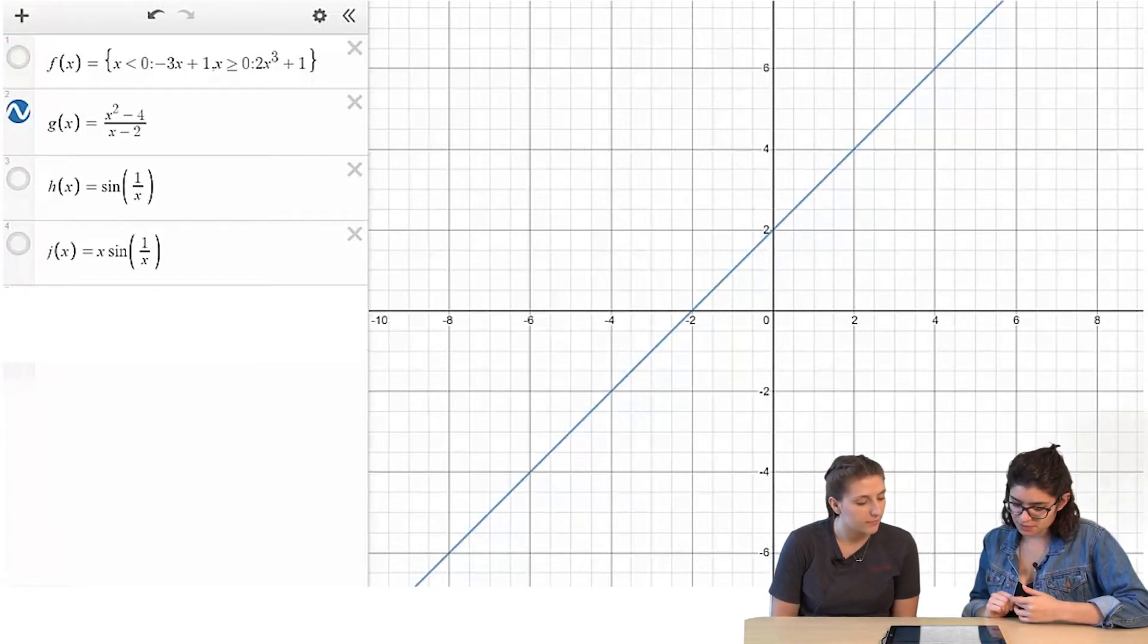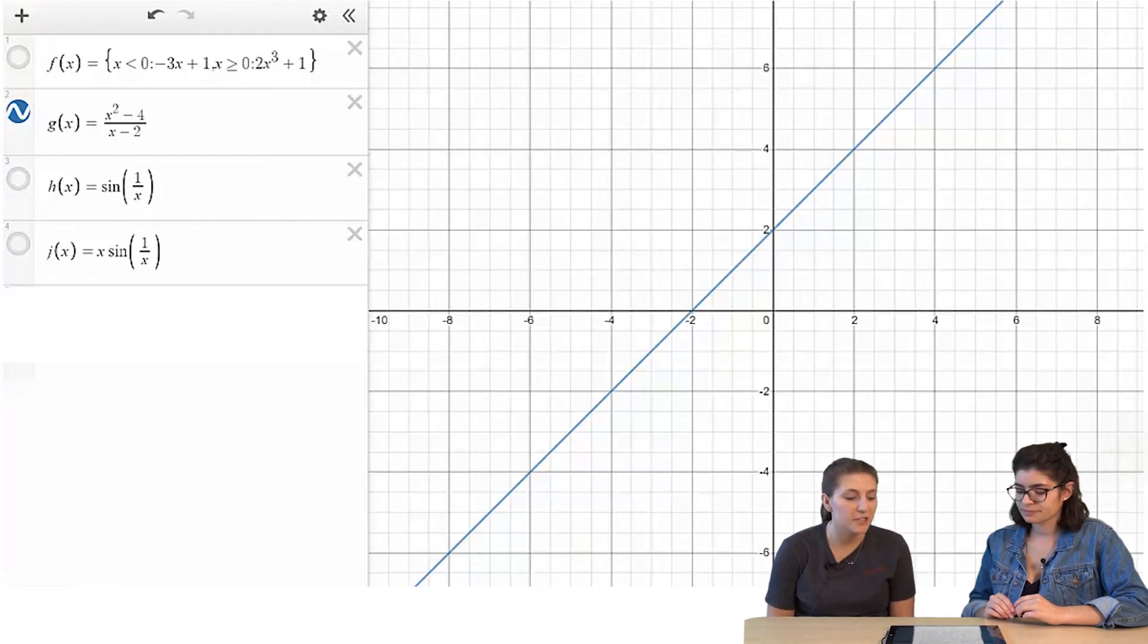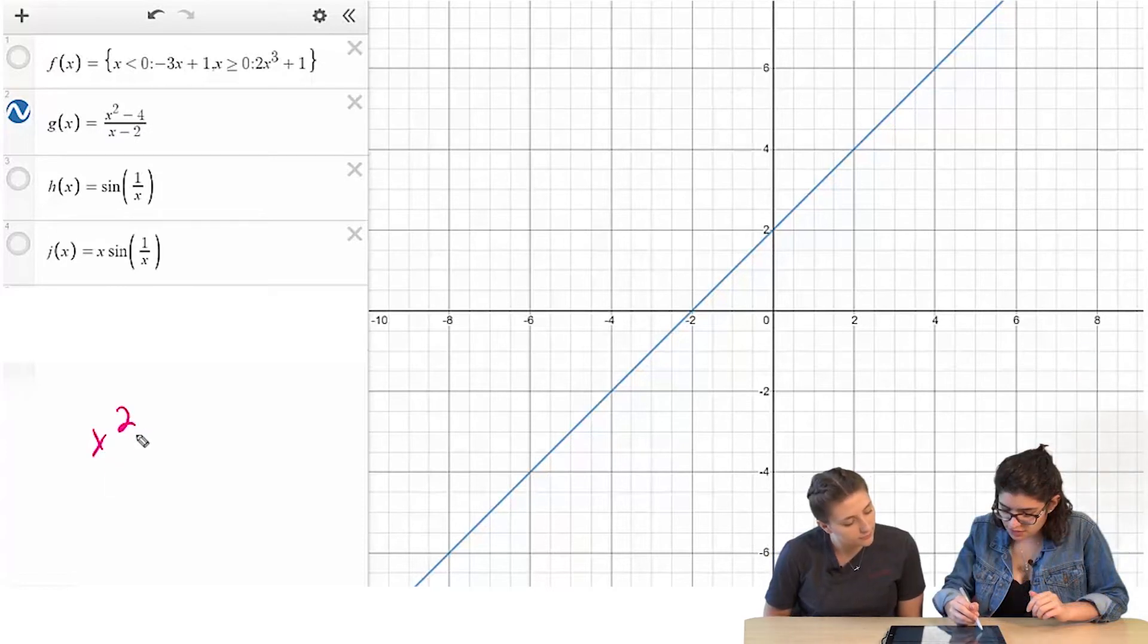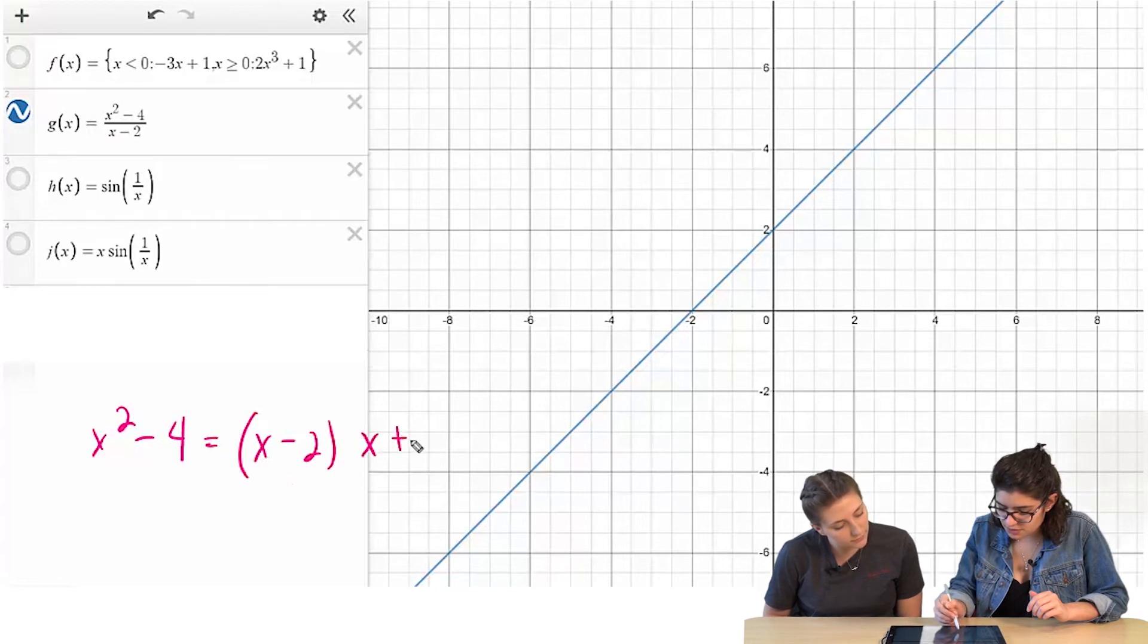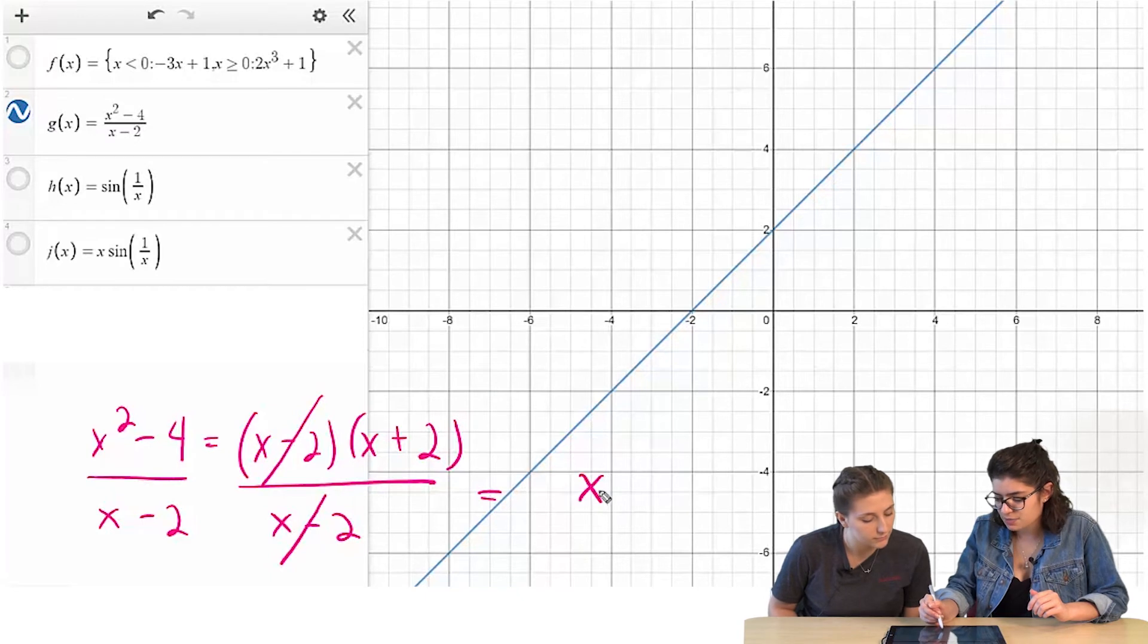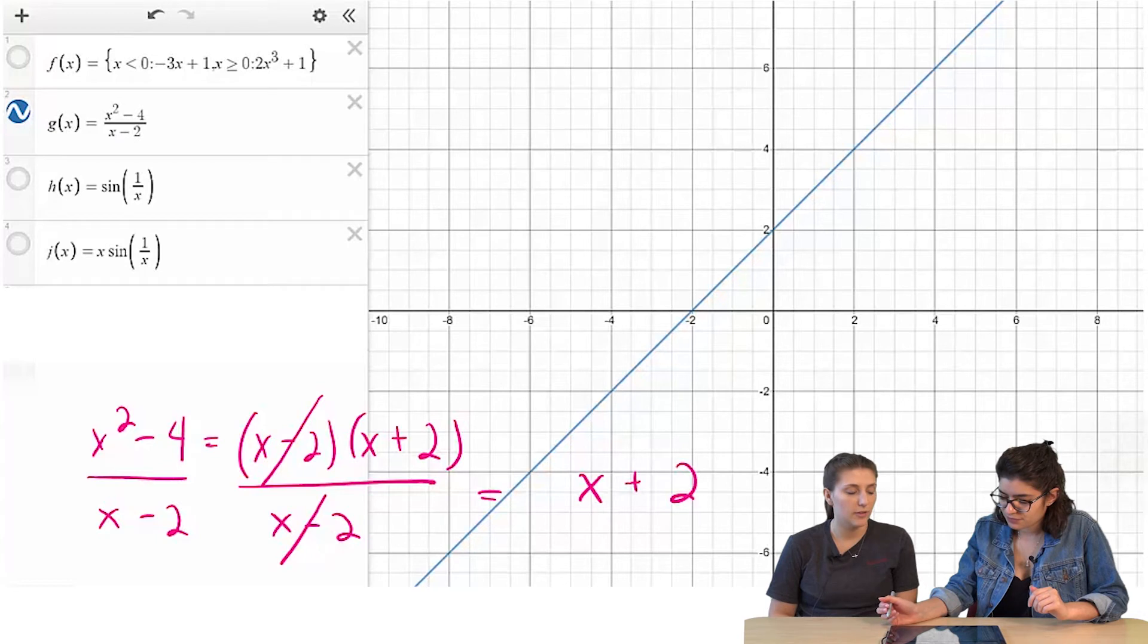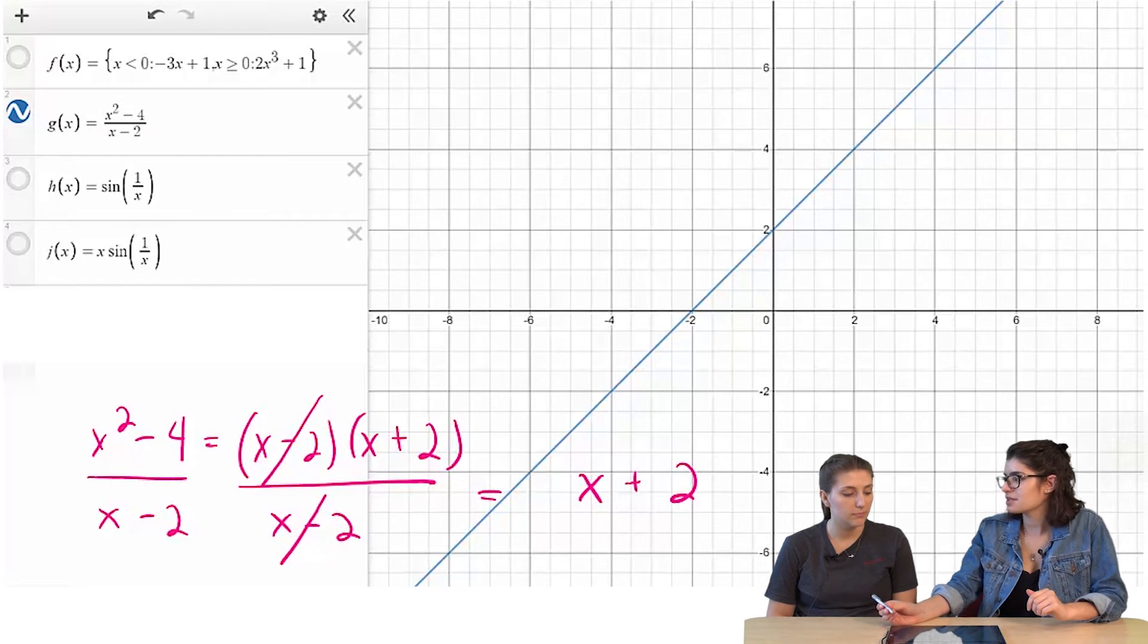Okay, so now we have g of x equals x squared minus 4 over x minus 2. I don't know, because the graph just looks like a straight line, so if you just showed me the graph, I'd say yeah, this is continuous, but then when I look at the equation, I feel like I shouldn't be able to plug in 2, because we have x squared minus 4, it's just x minus 2 times x plus 2. So when you have that over x minus 2, those will cancel. So really, we're just looking at the line x plus 2. Yeah. So that makes me think that it is continuous.